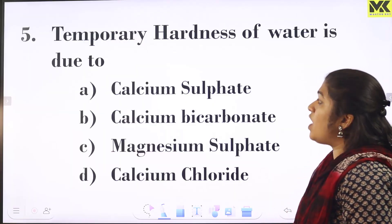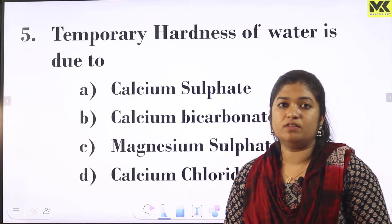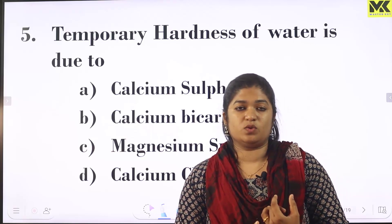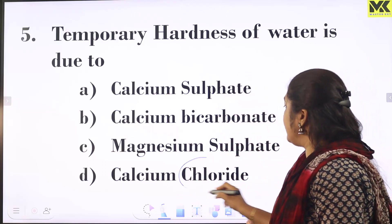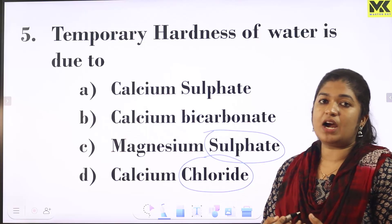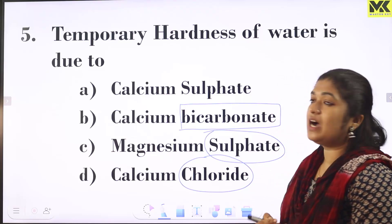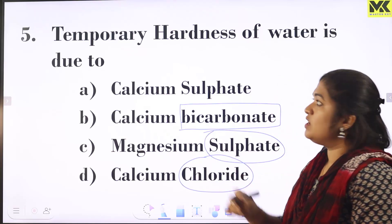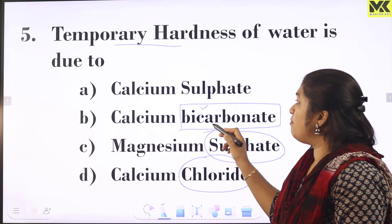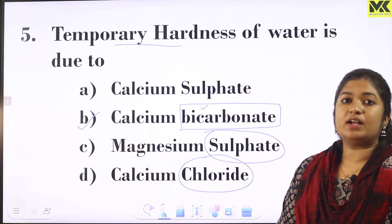Temporary hardness of water is due to bicarbonate minerals. Water hardness is of two types: permanent hardness and temporary hardness. Permanent hardness is due to sulfates and chlorates, while temporary hardness is due to bicarbonate minerals such as calcium bicarbonate.